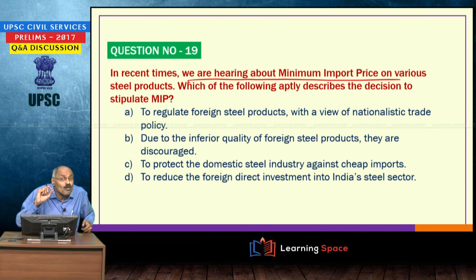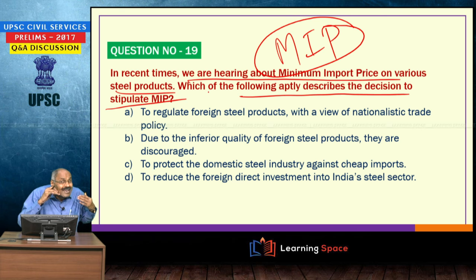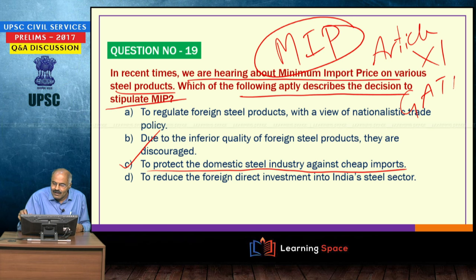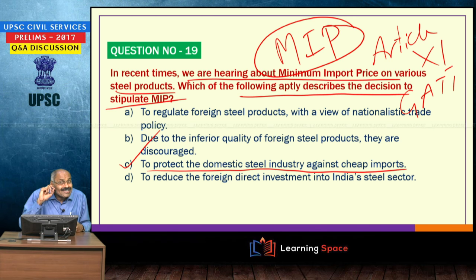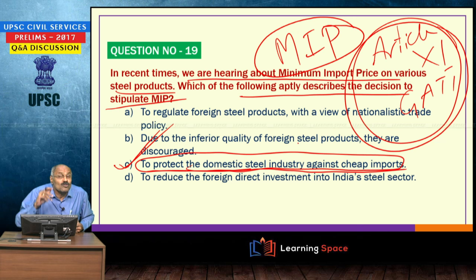The government imposed minimum import price on various steel products to protect the domestic steel industry against cheap imports. Article 11 of GATT says that minimum import price cannot be imposed, but there are some exceptions under other articles. The purpose of minimum import price is to protect the domestic steel industry against cheap imports.